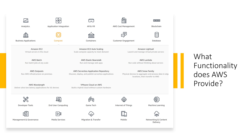What functionality does AWS provide? AWS supports a wide range of functions, from infrastructure technologies like compute, storage, and databases, to emerging technologies such as machine learning and artificial intelligence, data lakes and analytics, and Internet of Things.